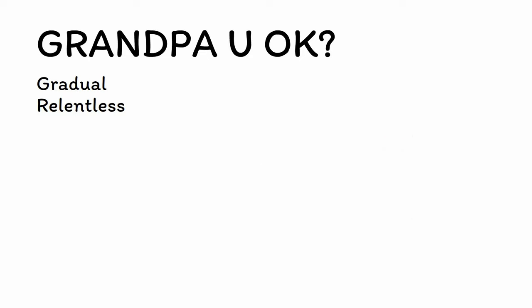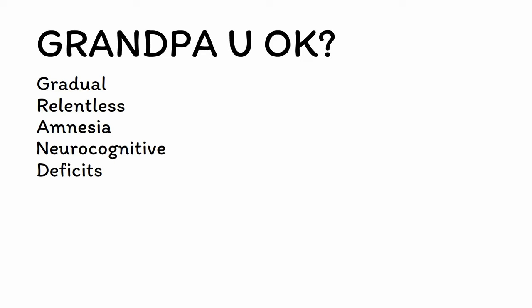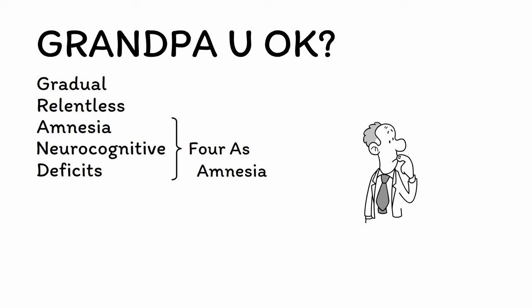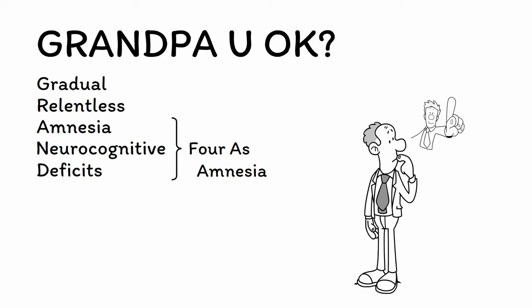Next, A, N, and D stand for amnesia and other neurocognitive deficits. These neurocognitive deficits are the defining feature of Alzheimer's disease. They are sometimes referred to as the four A's — not to be confused with the five A's of negative symptoms in schizophrenia. The first A is for amnesia. Loss of memory is the defining cognitive feature of Alzheimer's disease, as it is not only the most likely area to be impacted, but is also typically the first sign of the disorder as well.